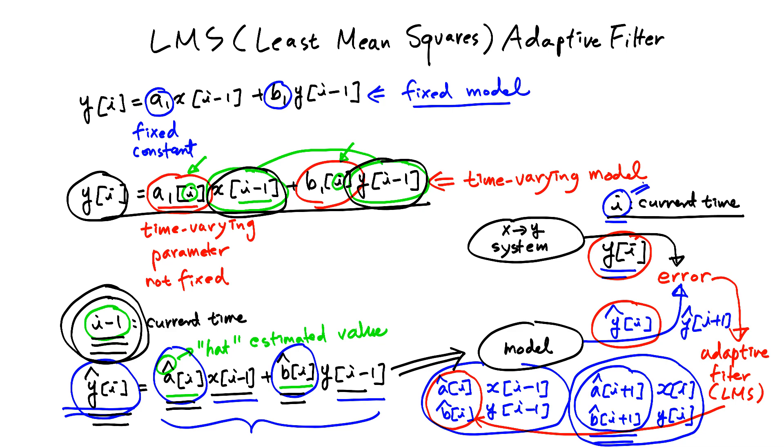If we move our time forward once more, the time becomes i plus 1. Then from the real system, Y of i plus 1 will be available. And again, you find the difference between this value and this value and find the error. Provide that value to adaptive filter. And adaptive filter will also update the parameter values and so on. This iterative update process will continue and repeat over and over.